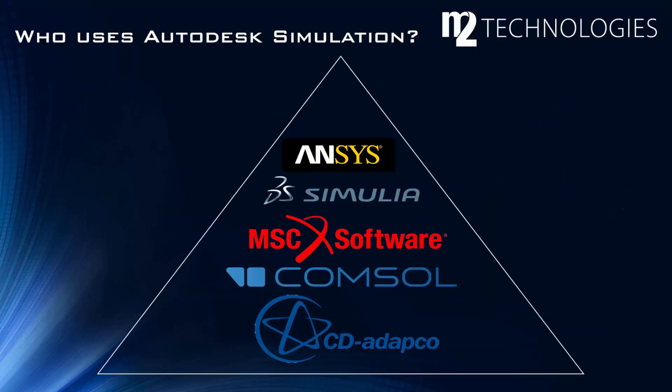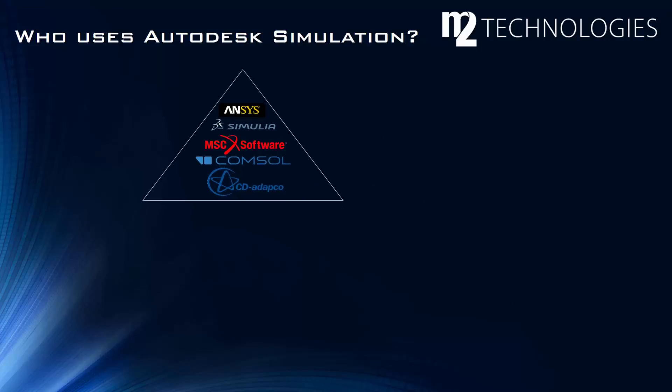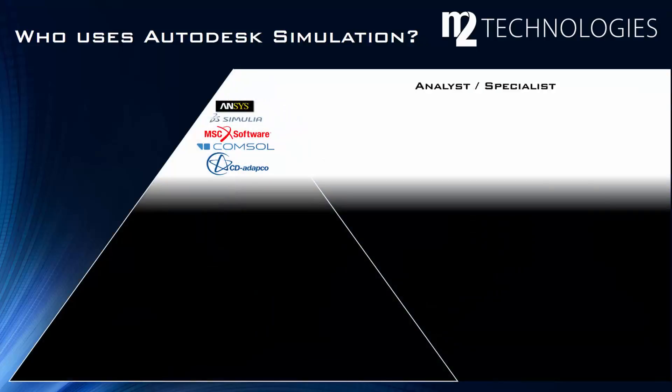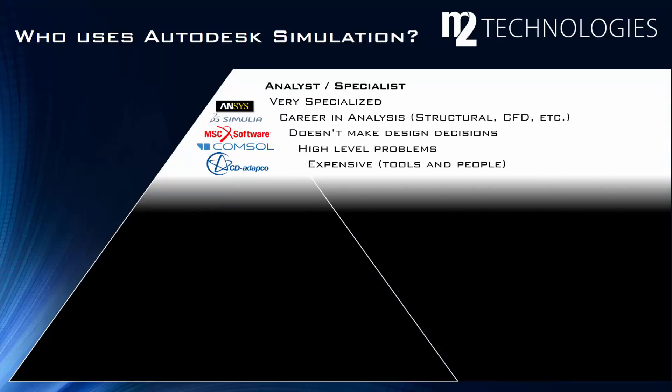What makes Autodesk simulation different, and who uses it? The other simulation tools on screen are great products, and M2 and Autodesk don't see themselves in direct competition with them — in many instances Autodesk products live in harmony with these tools within the same company because they serve different purposes. The triangle graphic on screen represents the entire community of engineers and designers. Traditionally, highly educated and specialized individuals at the top of the triangle have been relied upon to perform FEA analysis — typically career analysts using expensive tools.